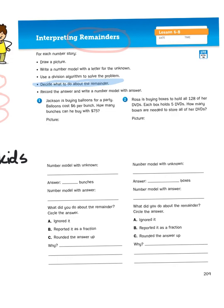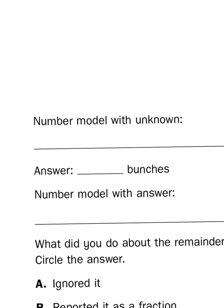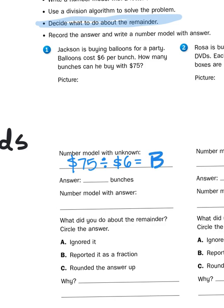So let's take a look at number one. Jackson is buying balloons for a party. Balloons cost $6 per bunch. How many bunches can he buy with $75? So our number model is going to be $75 divided into groups of 6 because it's $6 and we need an unknown, let's say B for bunches. So we need to divide 75 into 6 groups. Now I can create an array pretty easily with 75. So that's going to take a lot of little dots.